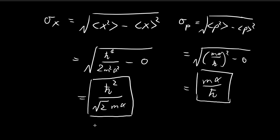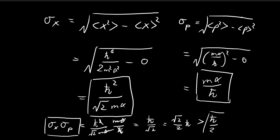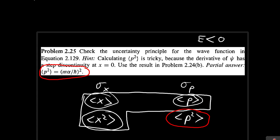We can now verify the uncertainty principle. Multiplying σ_x and σ_p together and canceling like terms, we get ℏ/√2, which can be rewritten as (√2/2)ℏ. This is larger than ℏ/2 because √2 is larger than 1. So the product σ_x · σ_p is always larger than ℏ/2, and the uncertainty principle is indeed verified.